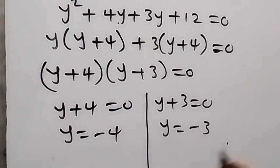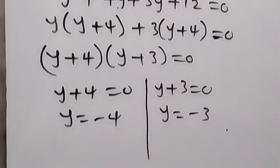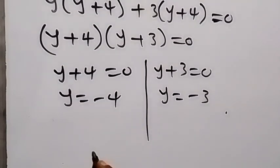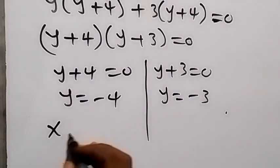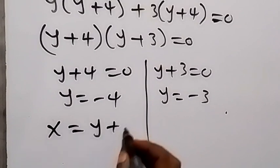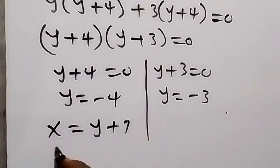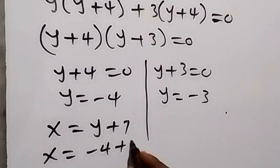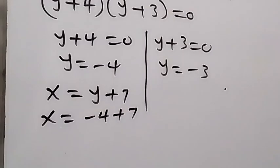To get the value of x, we can use equation 3, which is x equals y plus 7. Here, x will be equals to y is minus 4, that's minus 4 plus 7, that's 7 minus 4, and that's x equals 3.